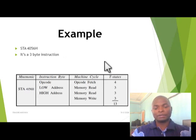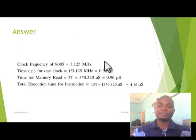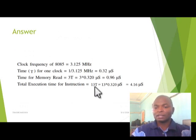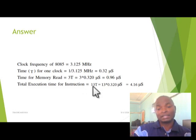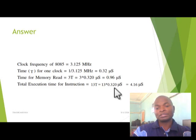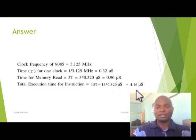Since we have 13 T-states, it is now easy to calculate the execution time. The execution time is: total T-states multiplied by the time taken by one T-state, which is 0.320 microseconds. So the total will be 13 × 0.320 = 4.16 microseconds to complete that instruction.